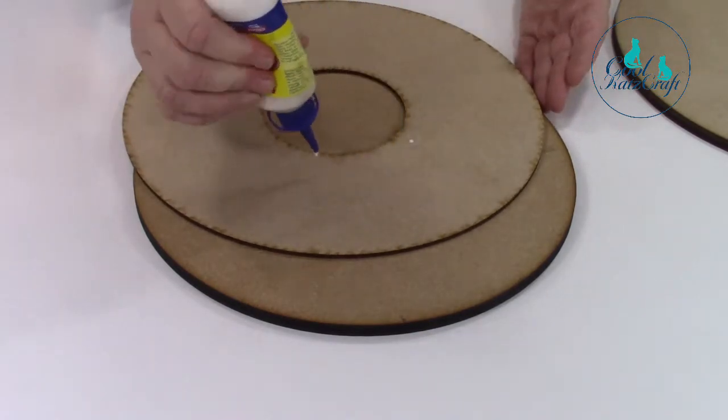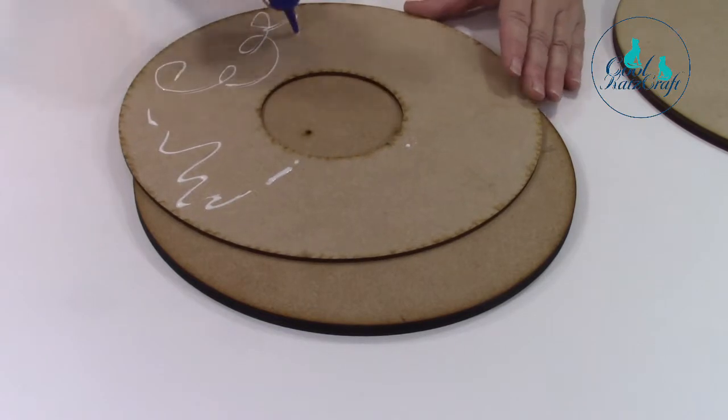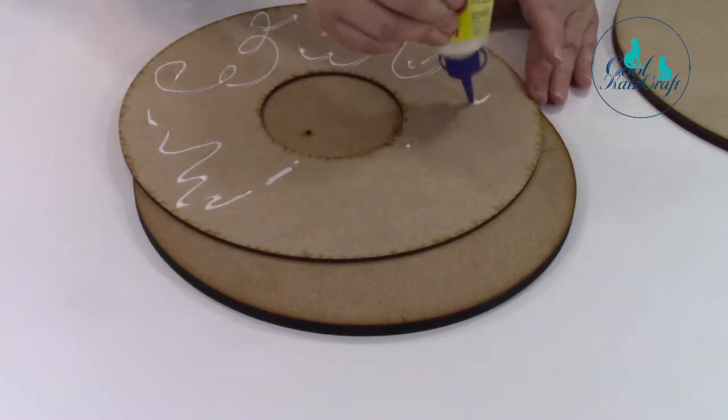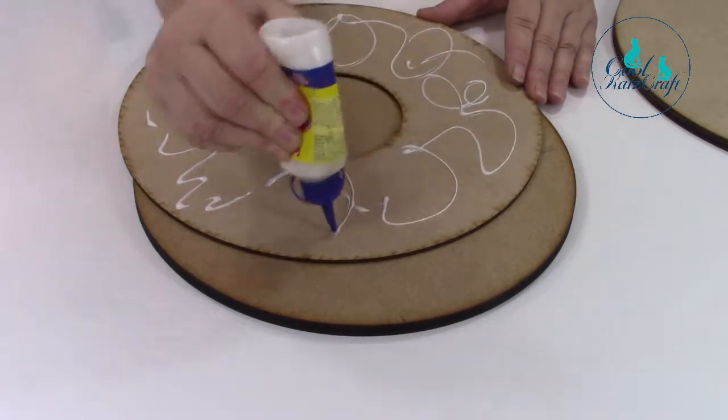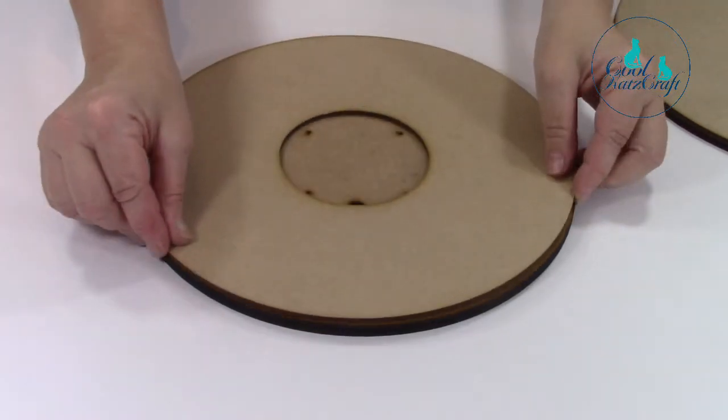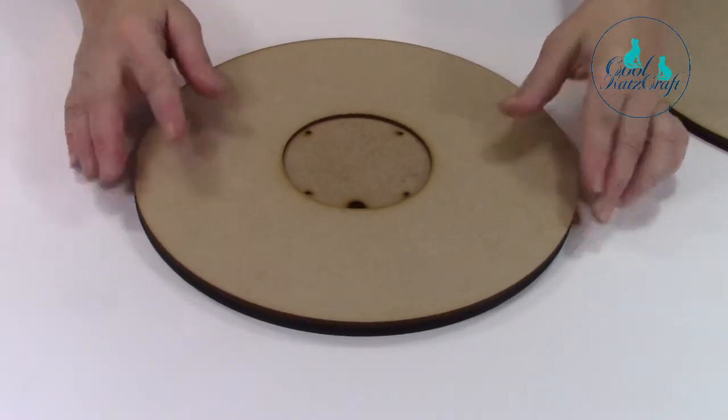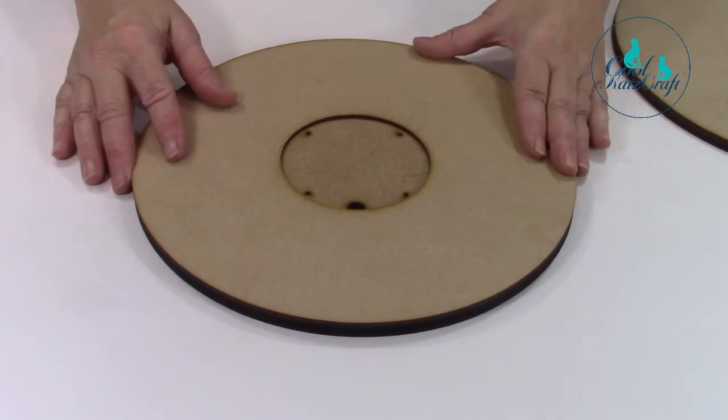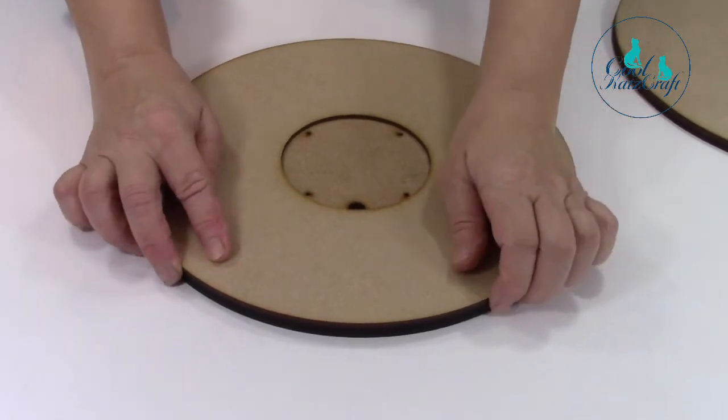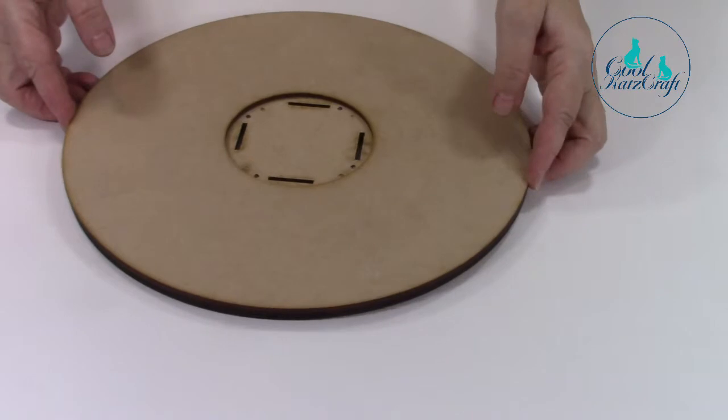You need strong tacky PVA, give it a good amount of glue and then pop it on here but just give it a little smooch around just so you can really spread the glue a little bit more. Line it up and put that to one side and then you're going to repeat with the other one.